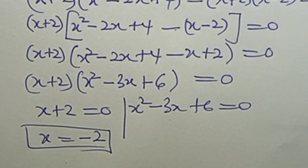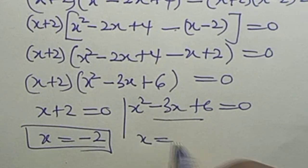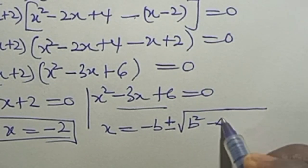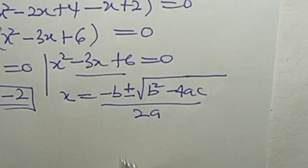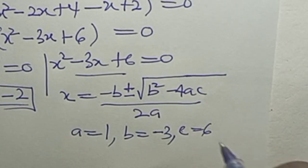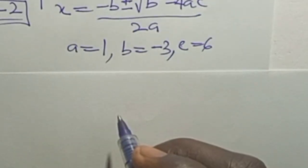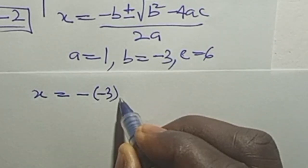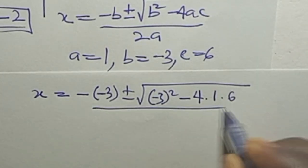The second factor s squared minus 3s + 6 = 0 is a quadratic equation. We apply the quadratic formula: s equals minus b plus or minus square root of (b squared minus 4ac), all over 2a. Here a = 1, b = minus 3, and c = 6. Substituting: s equals minus(minus 3) plus or minus square root of (minus 3 squared minus 4 times 1 times 6), all over 2 times 1.